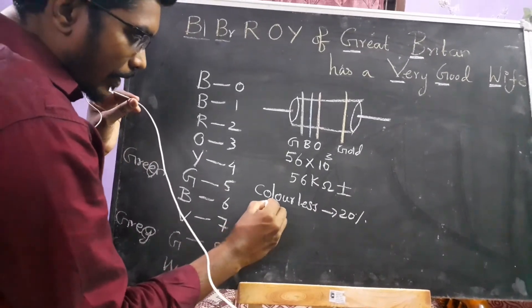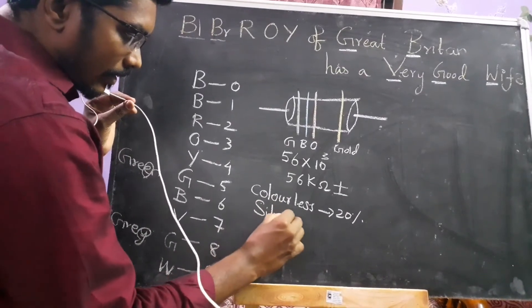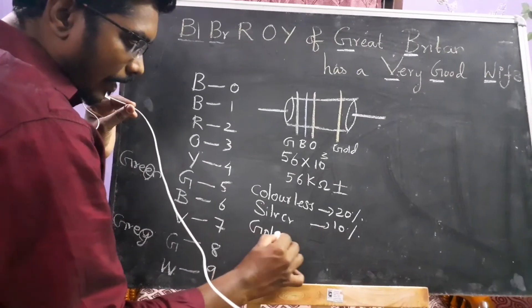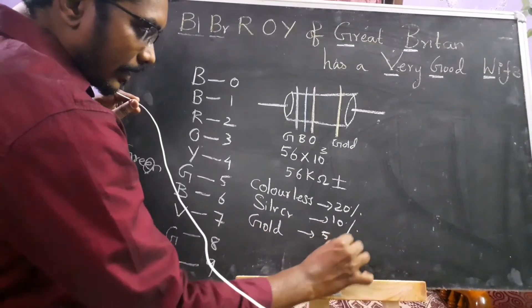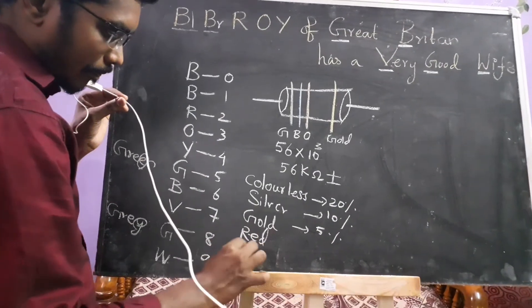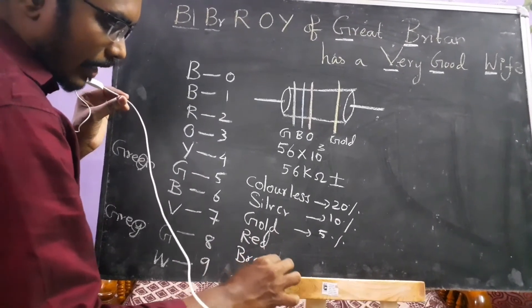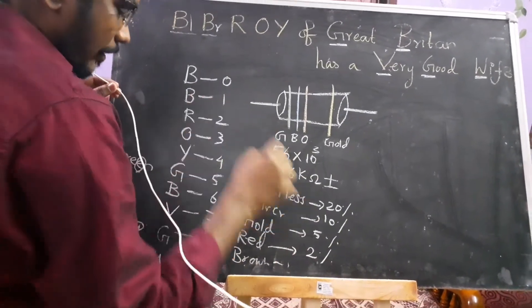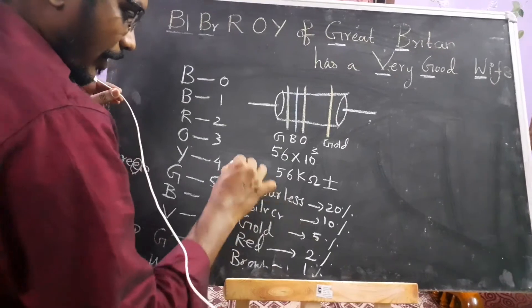If you change the color of this color, you will change the number. If you add the gold color, it is 5%. This is the chance of a red and a brown. Red is 2% and brown is 1%. These are the chances.